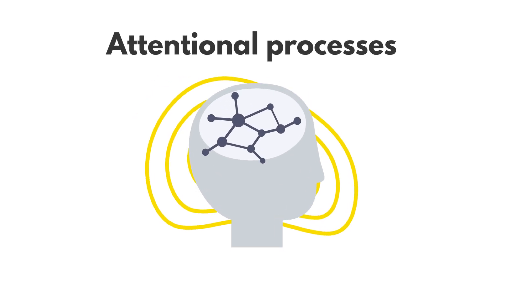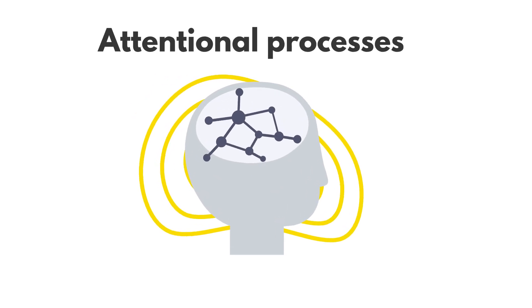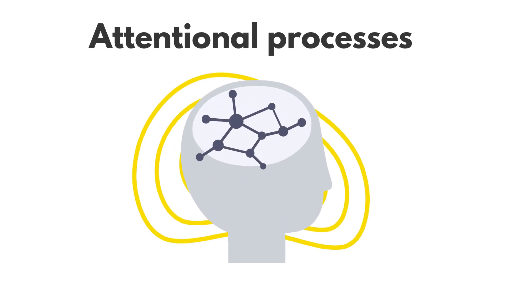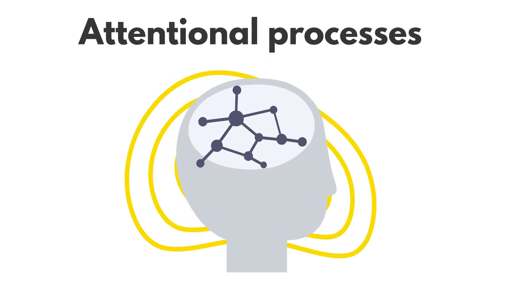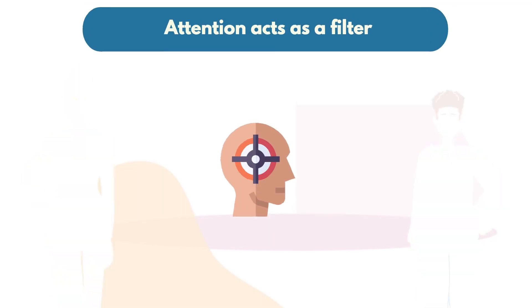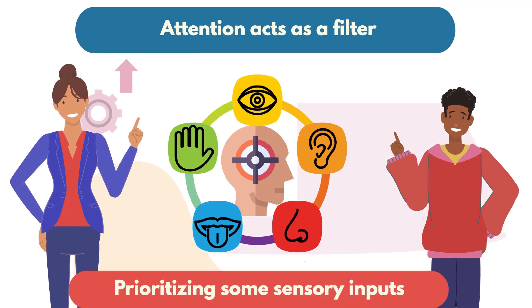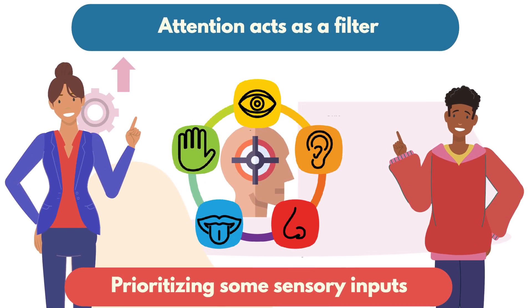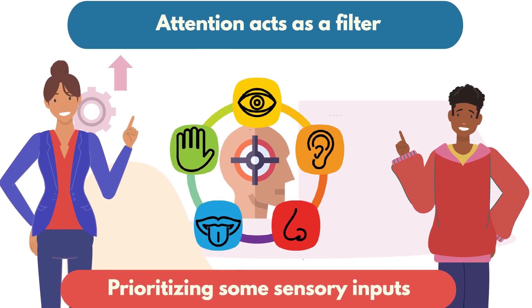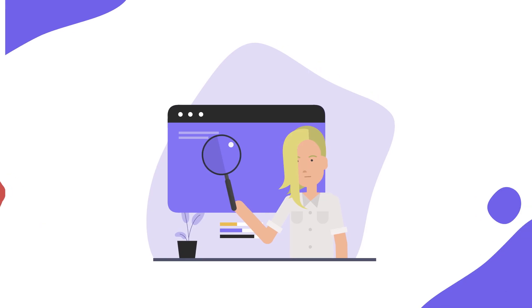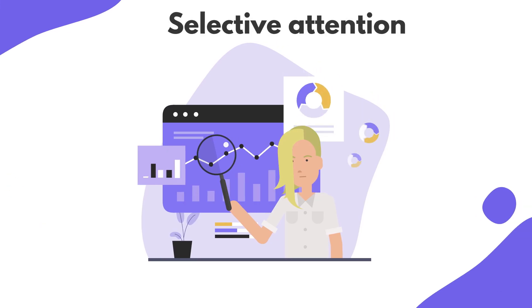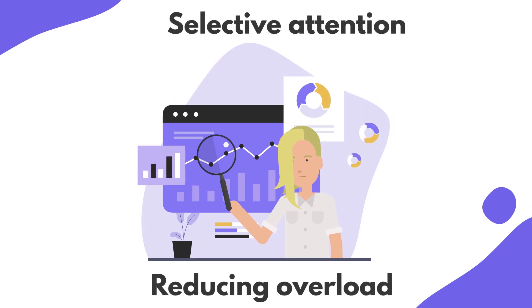Attentional processes then determine which stimuli receive focus. Attention acts as a filter, prioritizing some sensory inputs while ignoring others. This selective attention allows us to concentrate on relevant information while reducing overload.